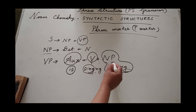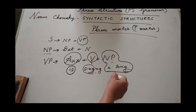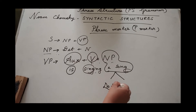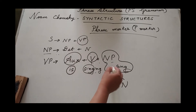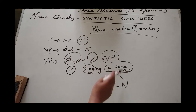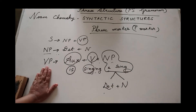Can you split the noun phrase 'a song' further? Yes. How? Determiner plus noun. 'A' is a determiner, and 'song' is a noun. So the noun phrase within the verb phrase can be further broken down into determiner plus noun.